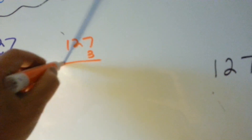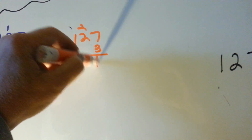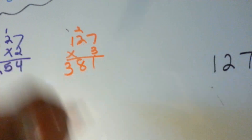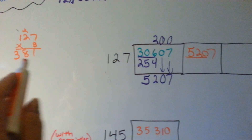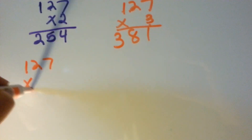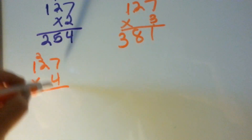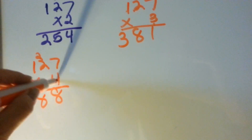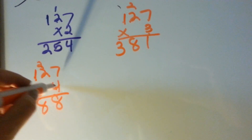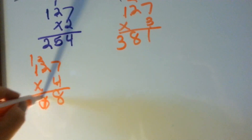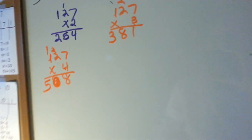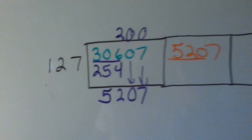Let's try 3 and see what happens: 7 times 3 is 21, 3 times 2 is 6, 7, 8 — that's 381. Do you think maybe one more might fit in there? Let's try 4: 7 times 4 is 28, 4 times 2 is 8, 9, 10 — 4 times 1 is 4 plus 1 is 5. So 4 times 127 would be 508.